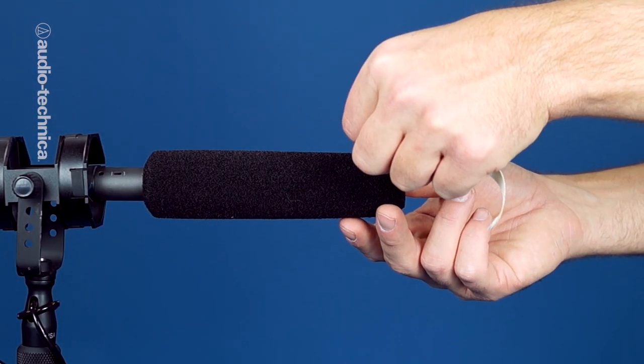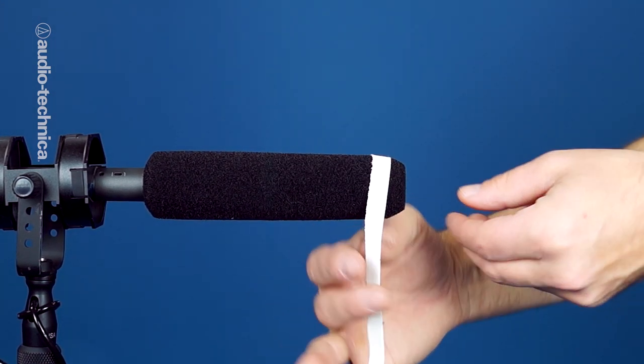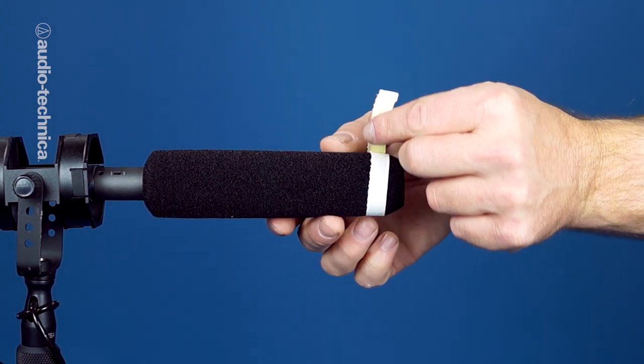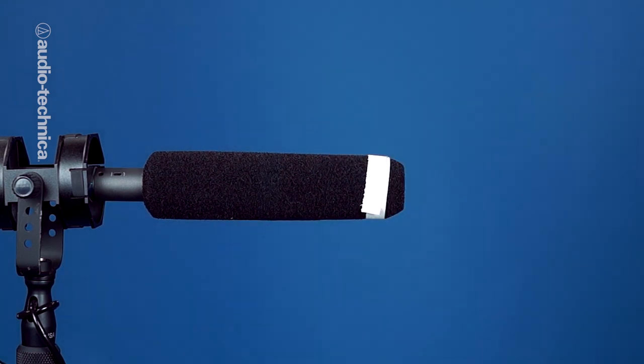You should also add a thin strip of camera tape to the tip of your windscreen. This makes it easier for the camera operator to see the location of the mic in the viewfinder, especially when shooting against a dark background.